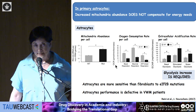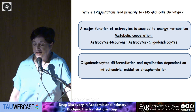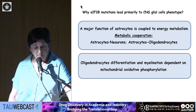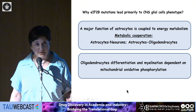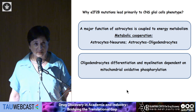In contrast, in primary astrocytes, we see an even greater increase in mitochondrial abundance than in primary MEFs, but this is not enough. Oxygen consumption rate per cell is much lower in mutant cells for basal respiration, maximal respiration, and ATP-linked respiration, and glycolysis also increases. Astrocytes are definitely more sensitive than fibroblasts to EIF2B mutations. Since astrocyte performance is defective in vanishing white matter patients, this explains why mutations primarily affect CNS glial cells and the white matter, because a major function of astrocytes is coupled to energy metabolism through metabolic cooperation with neurons and oligodendrocytes — and oligodendrocyte differentiation and myelination are highly dependent on mitochondrial oxidative phosphorylation.